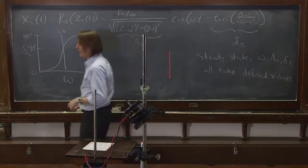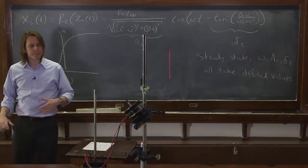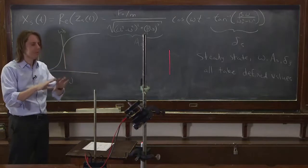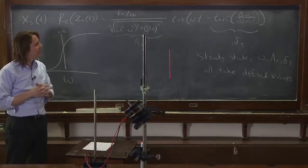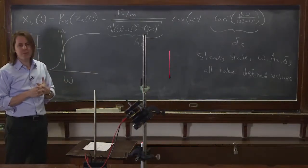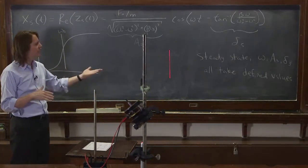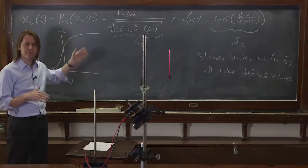So this is different from the free oscillator. The free oscillator, we had a case where omega, the frequency, ended up depending on the spring constant and the mass. But A and phi, the phases, were free to vary. They depended on the initial conditions. Now they don't. Now they're defined by the system.